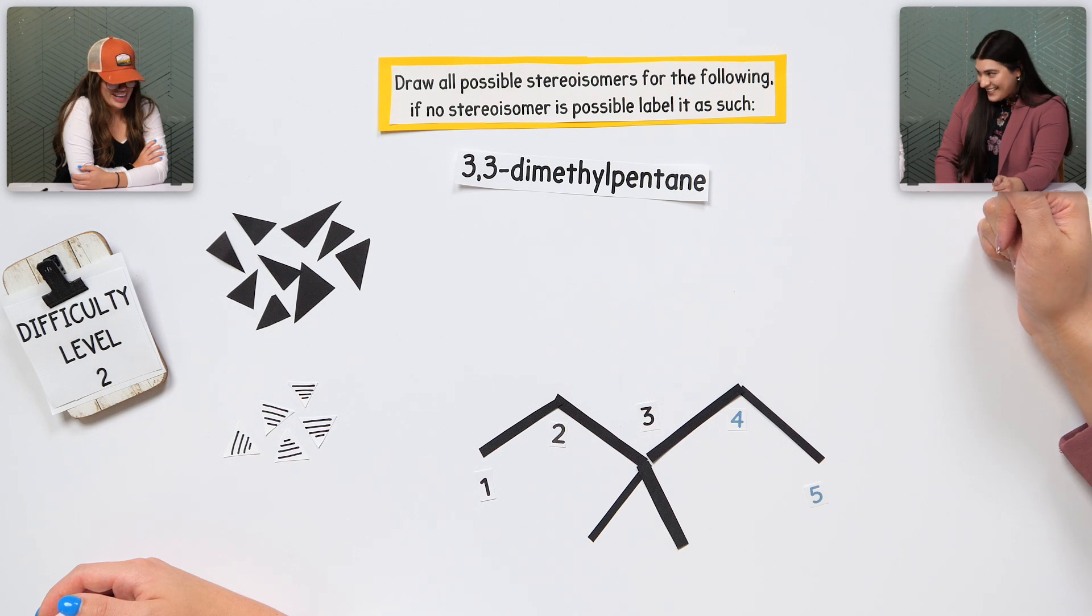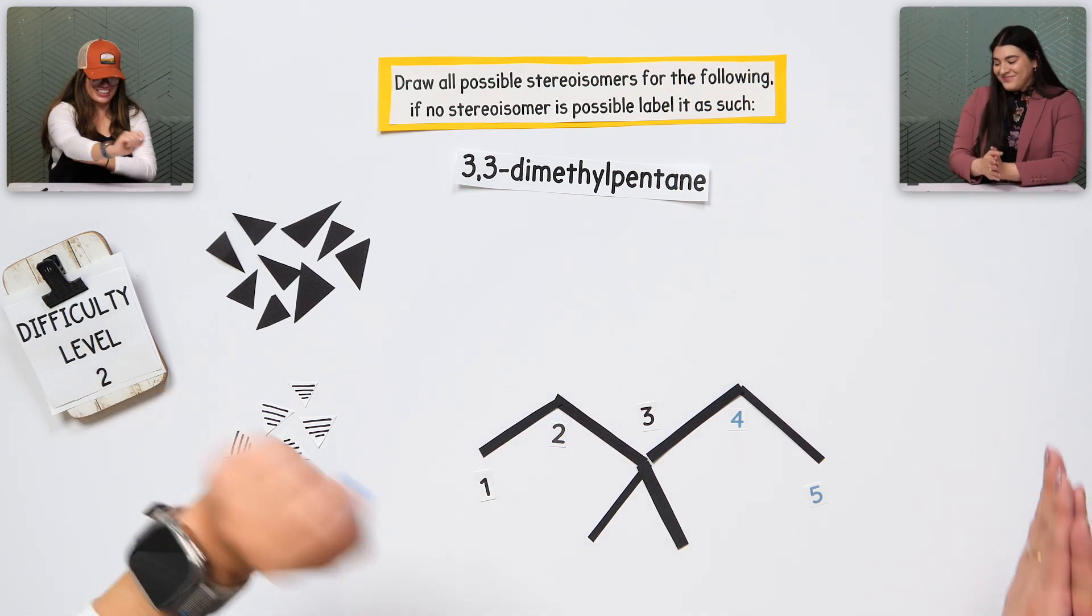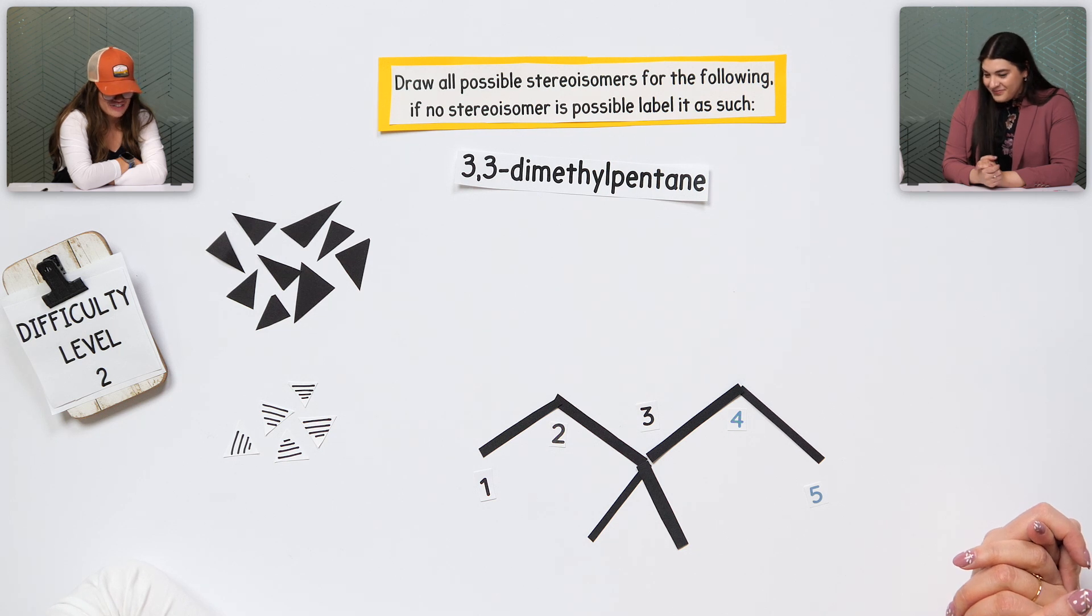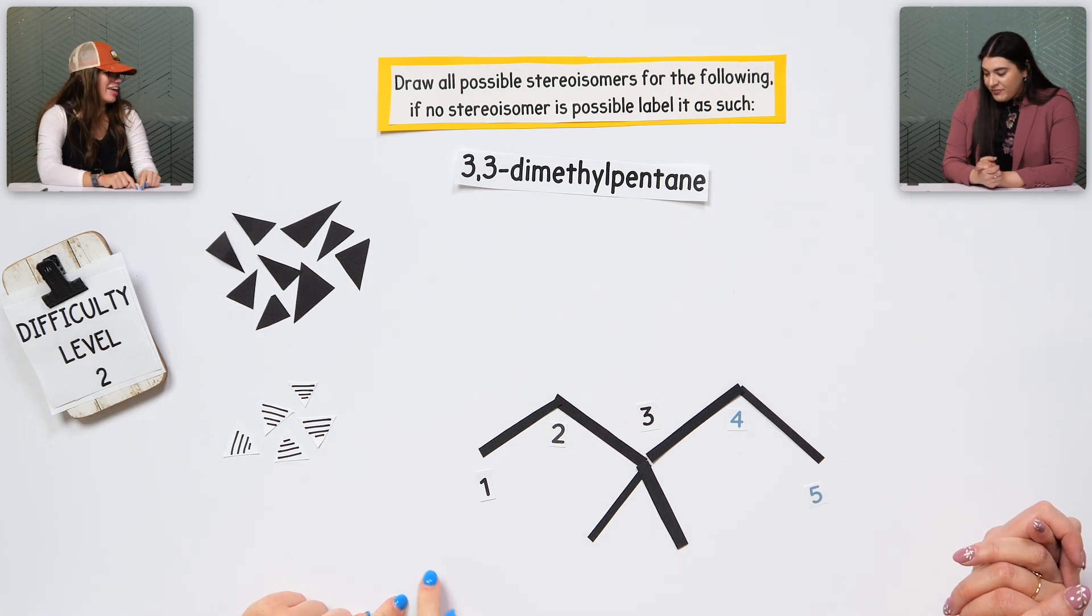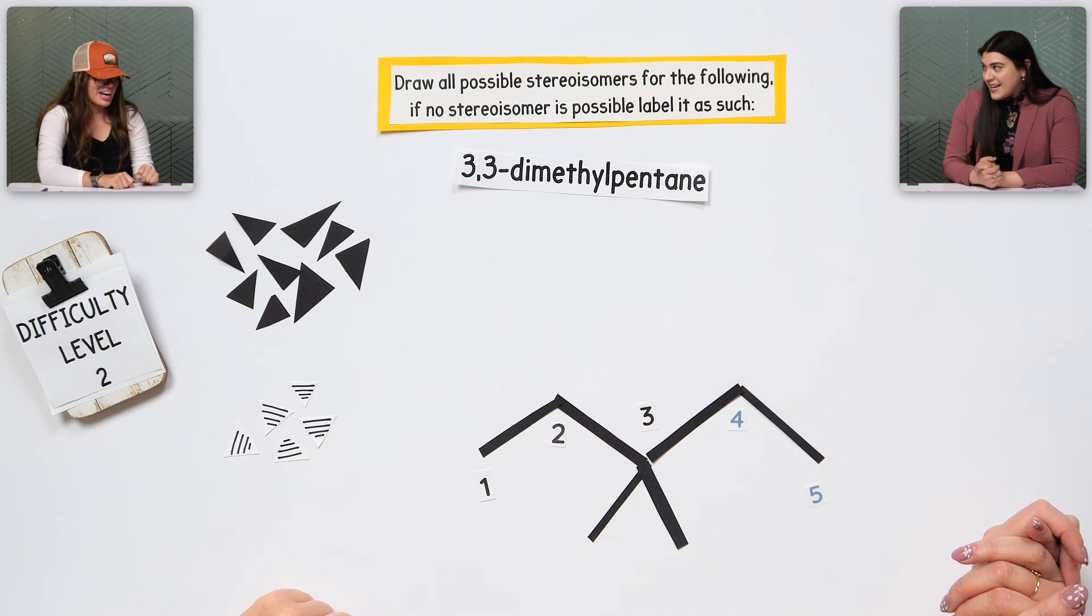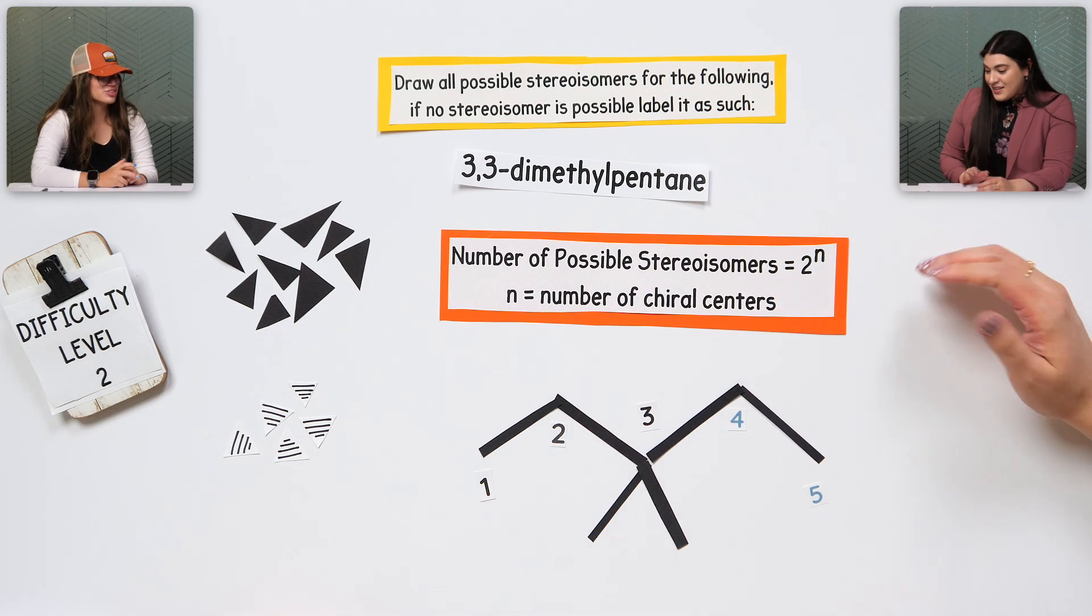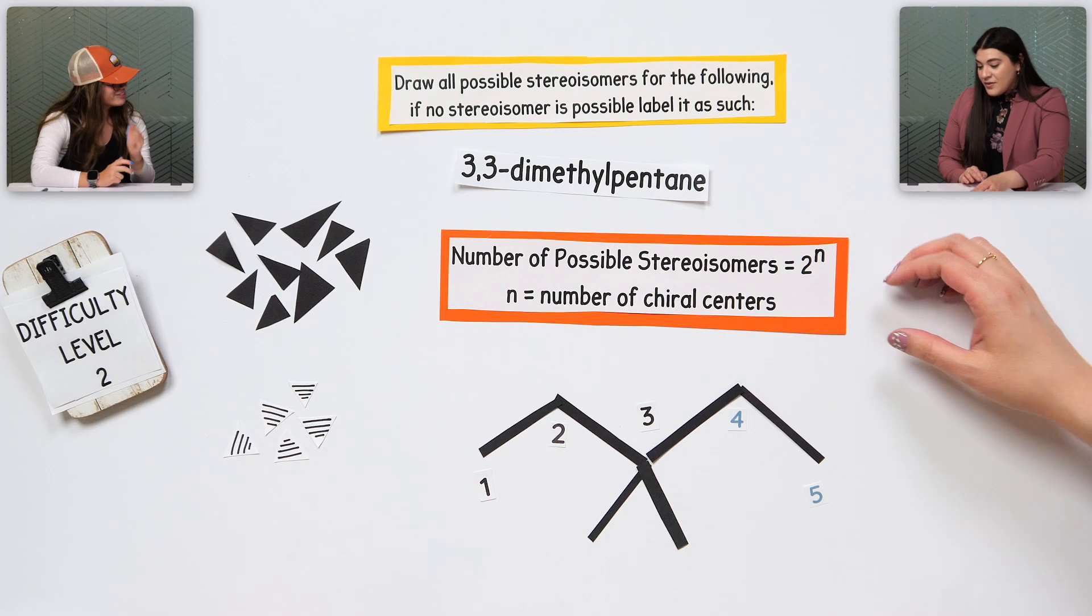Next. What's this question asking? I know, I forgot that one with anyone. I was like, that was so easy. Okay, draw the possible stereoisomers for the following. Okay, so it's the same thing where you use the N, two to the N. What's N? Number of chiral centers. So, it'll only be one. So, it's two. There's two possibilities, right?